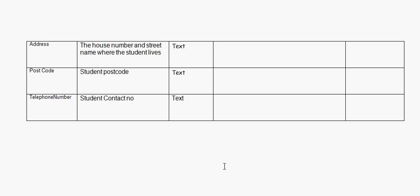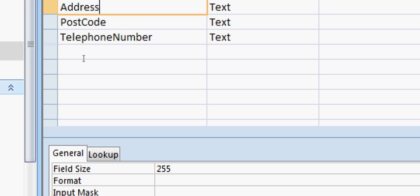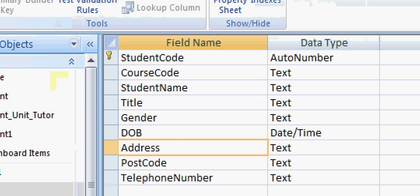For the address field, it can contain numbers, different characters, letters, and spaces. It's best to simply set a length for this field — set the length to 50 characters. In the database, just set the field size to 50. That's all you need to do for address.